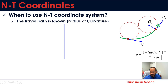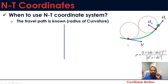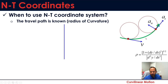On the image here, the green line is the travel path, and the particle is at a given point. At that instant, if you draw a circle tangent to the curve, the radius of that circle is the radius of curvature at that point. The radius of curvature is not constant — it changes along the path. Here is the equation to find the radius of curvature at any point, using x and y.